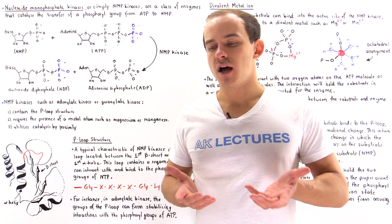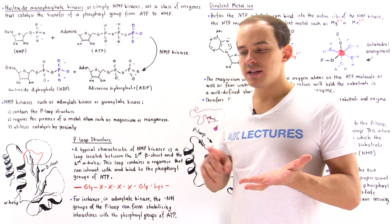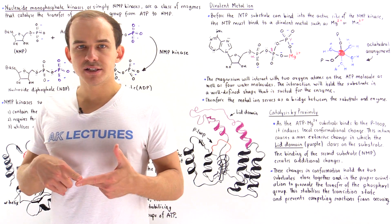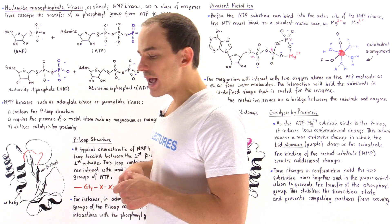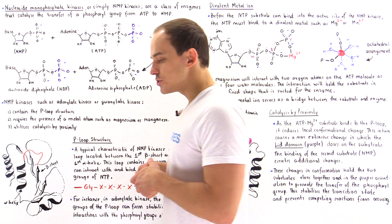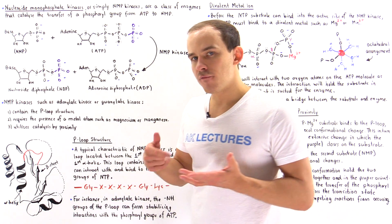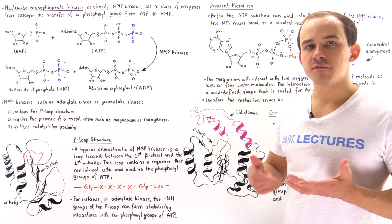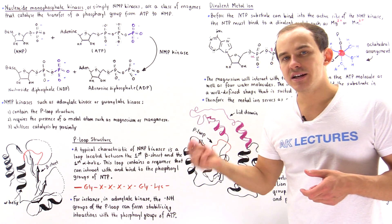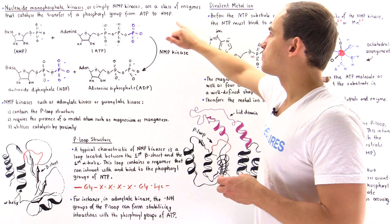So far in our discussion on enzymes, we focused on two types: proteases and carbonic anhydrases. Now we're going to focus on a third type of enzyme found in our body known as nucleoside monophosphate kinases, or simply NMP kinases. NMP kinases catalyze the transfer of a phosphoryl group from some type of nucleoside triphosphate — for example, an ATP molecule — onto another molecule, namely the nucleoside monophosphate or NMP.